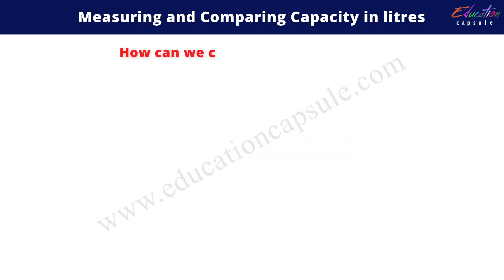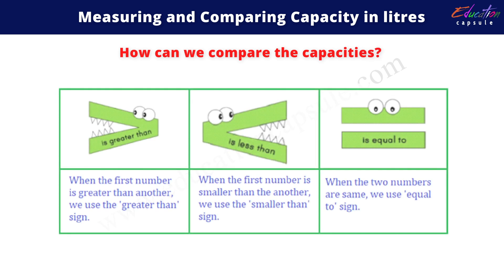Now, how can we compare the capacities? We use three symbols to compare. The first one is greater than — when the first number is greater than another, we use the greater than sign. Next is less than — when the first number is smaller than another, we use the less than sign. Next is equal to — when the two numbers are the same, we use the equal to sign.